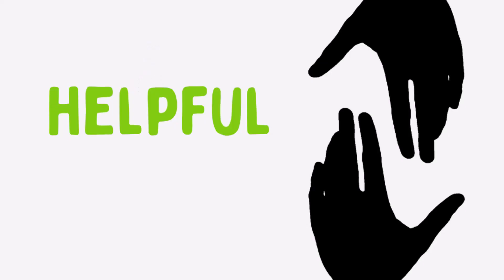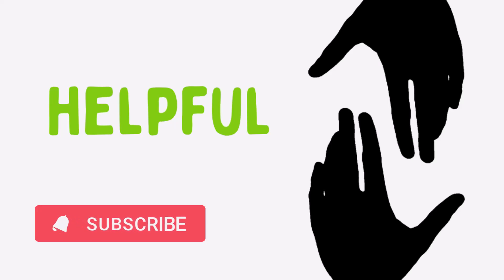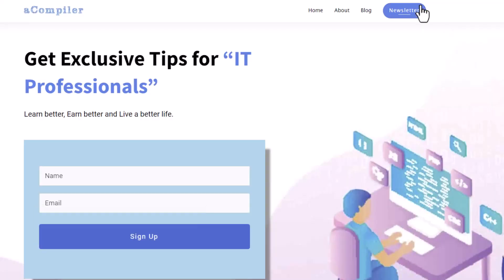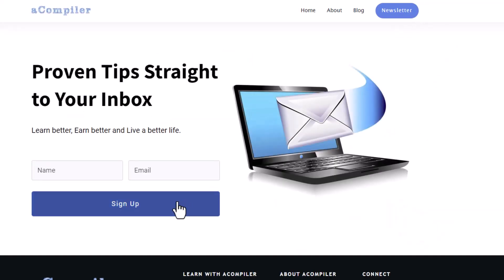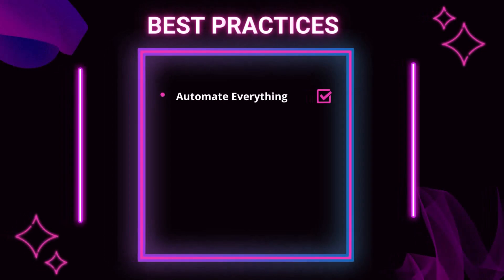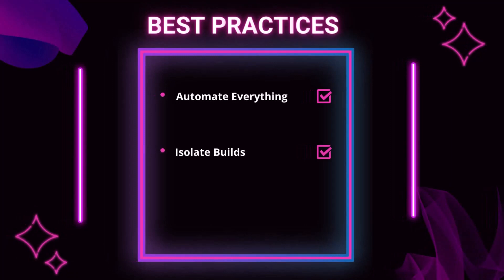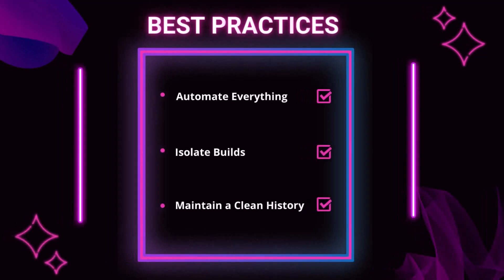It's not about how big your repo is, but how smart you work with it. Here are the 3 best practices for working with MonoRepos. Automate everything: from testing to building, let automation handle the work. Isolate builds: ensure changes in one part do not trigger builds in other parts. And finally, maintain clean history: encourage meaningful commits and structure them for clarity.